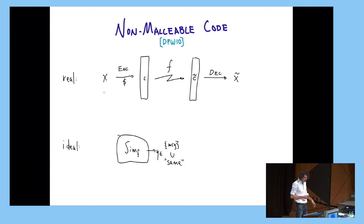So how do they formalize this? They formalize this in a real ideal paradigm, where for any tampering function f, we should be able to simulate this tampering. The simulator is just going to flip some coins and output something. It will either output a message, like X, or it will output this special symbol same.